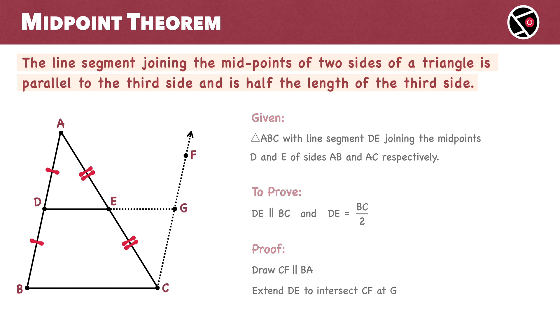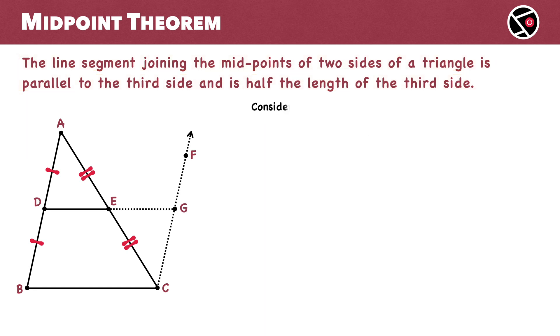Next, let's consider triangles ADE and CGE. Angle AED equals angle CEG. Vertically opposite angles are equal. This is equation number one.